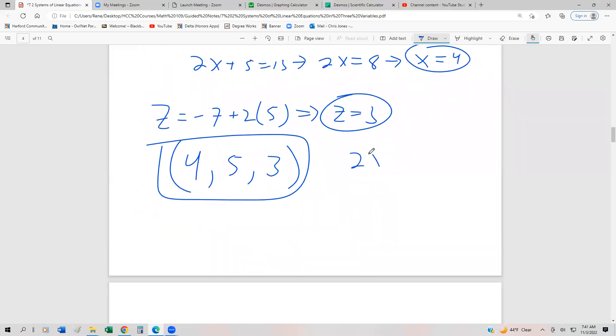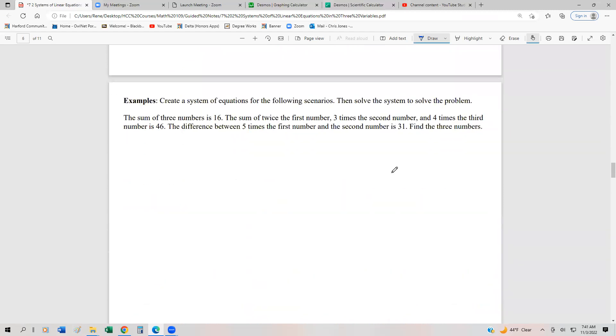So remember, we had 2x minus 3y plus 2z equals negative 1. 2 times 4 minus 3 times 5 plus 2 times 3 equals negative 1. 8 minus 15 plus 6 equals negative 1. This is going to be negative 7 plus 6. That certainly equals negative 1. So at least we verified that we think it's going to work. All right.